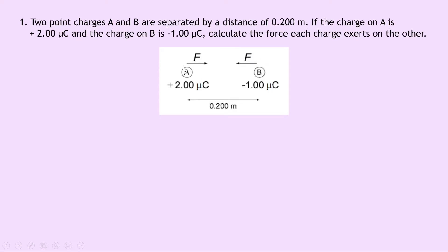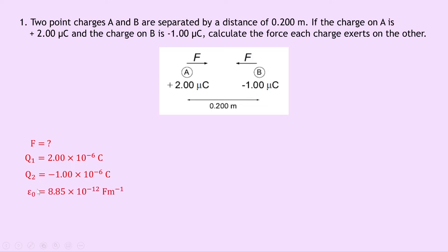So we can simply just use the relationship for Coulomb's inverse square law to find the force. Writing down what we know from the question, we're trying to find the force F. We know the charge Q1 is 2 times 10 to the minus 6 coulombs — that's writing out the 2 microcoulombs charge in full. The charge Q2 is minus 1 microcoulombs, which is the same as minus 1 times 10 to the minus 6 coulombs. Constant epsilon naught, which is the permittivity of free space, is 8.85 times 10 to the minus 12 farads per metre. And R, the distance between the two charges, is 0.2 metres.